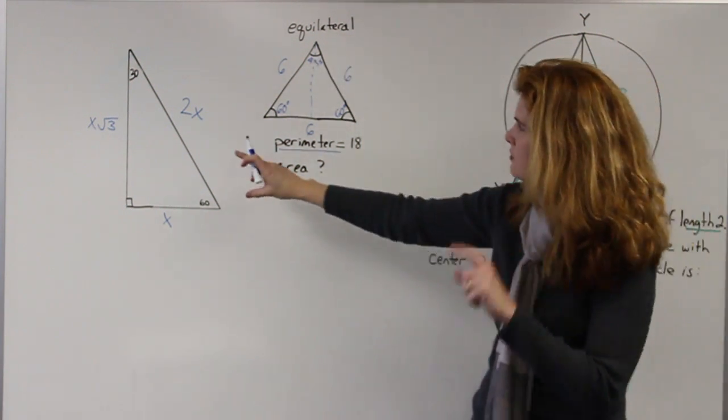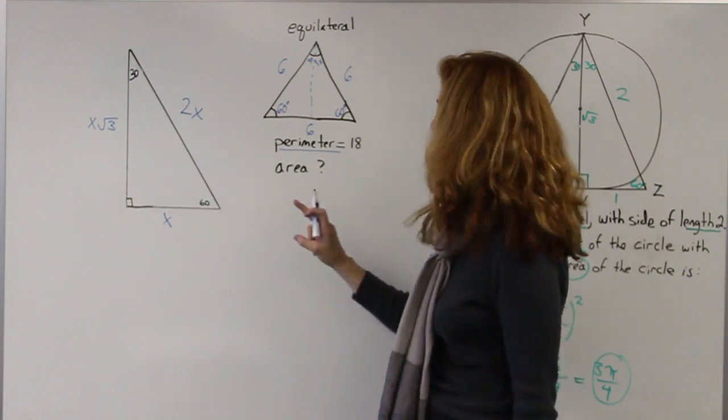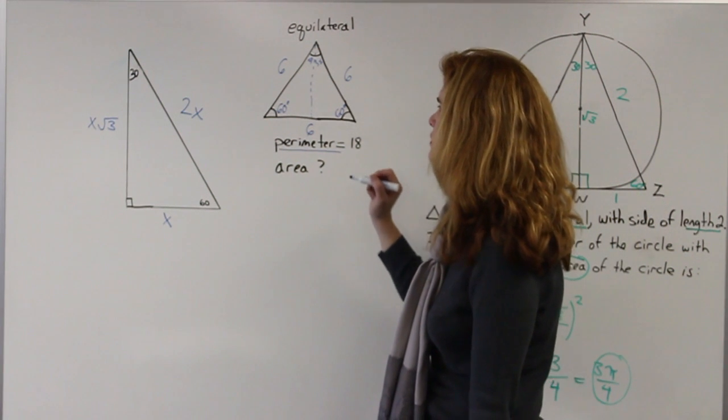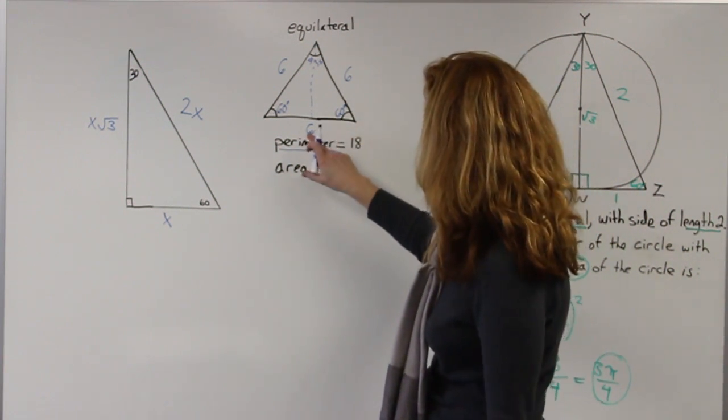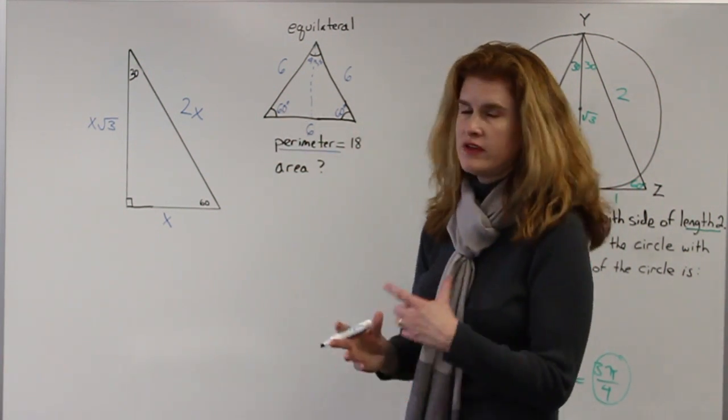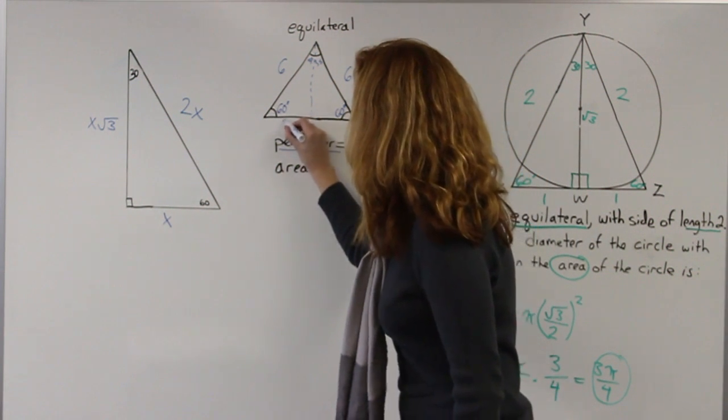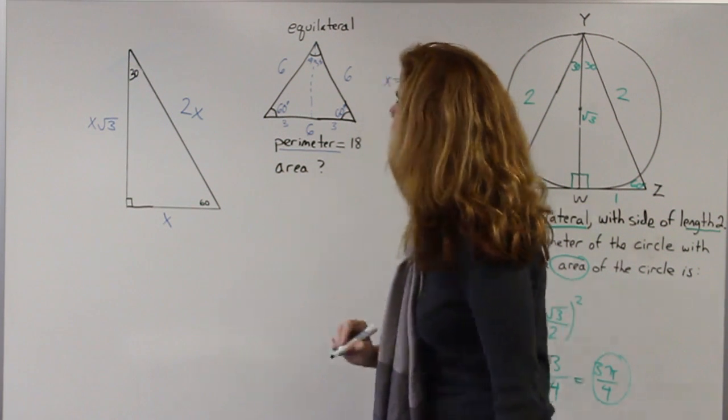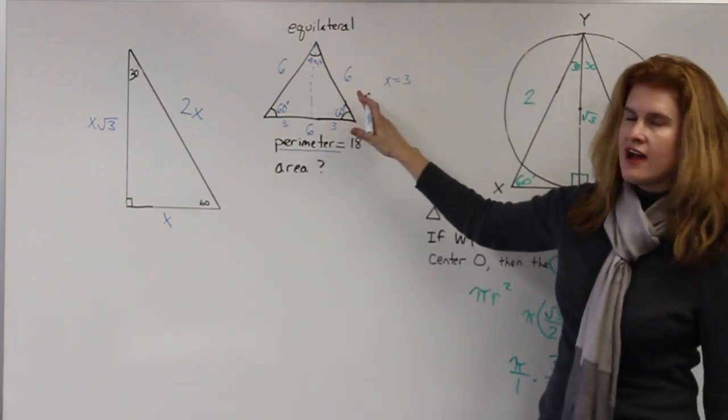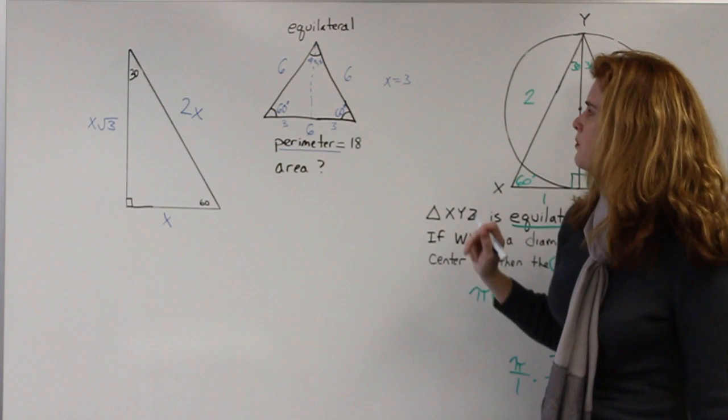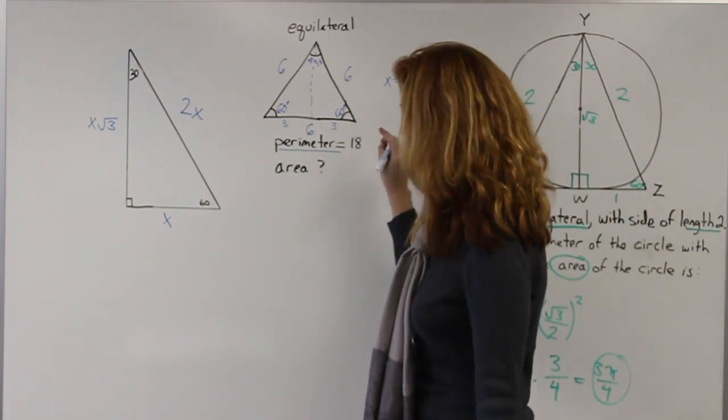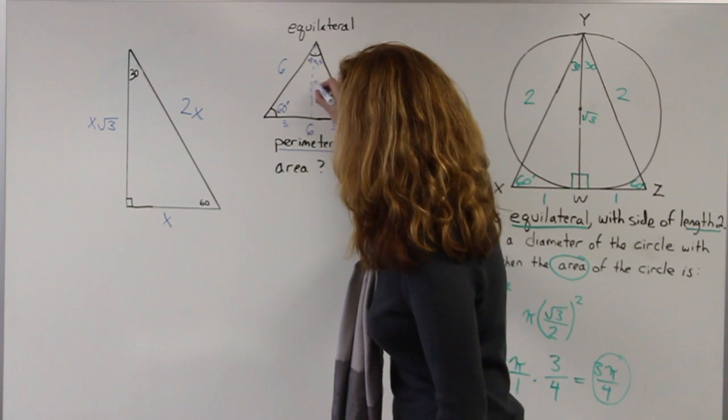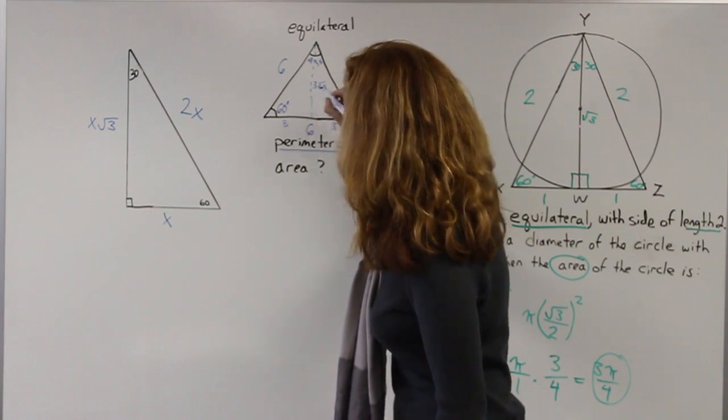Now I'm going to use my ratios to figure out how to find the area. Well, I know that the side opposite 30 degrees is my x. So because the whole side is 6, half of it is going to be 3. So that means that my x is 3. My hypotenuse, which I have, is 2x, which works. And that means that my side that's opposite 60 degrees is x root 3. So this side is going to be 3 root 3.